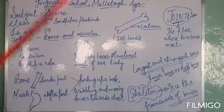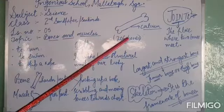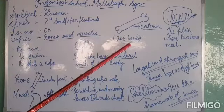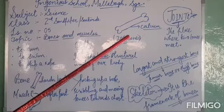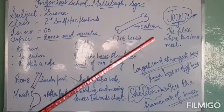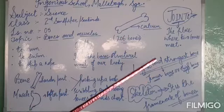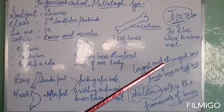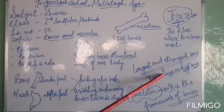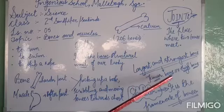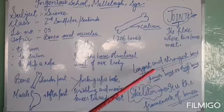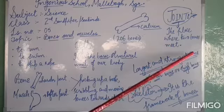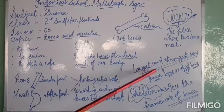As we grow up, the number of bones reduces to 206. The bone joining our hip and knee is known as the thigh bone, or femur bone. The femur bone, or thigh bone, is the largest and strongest bone in our body.